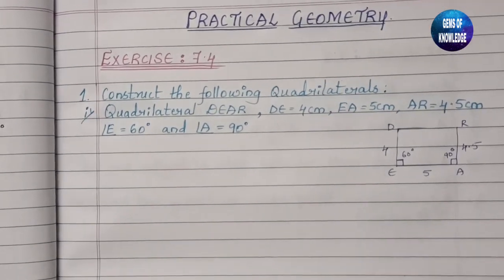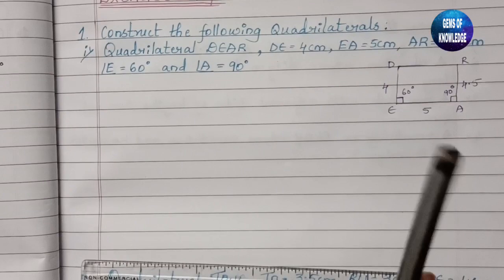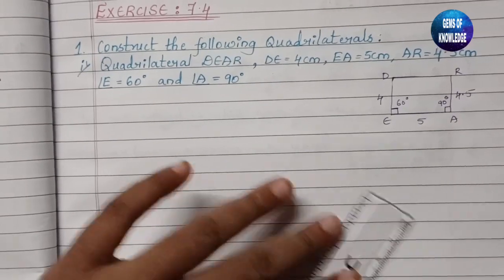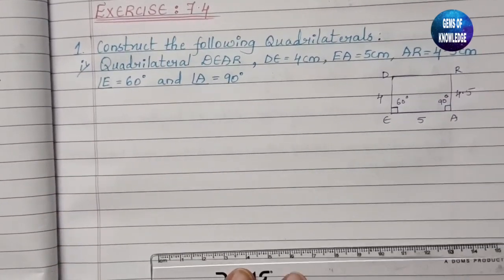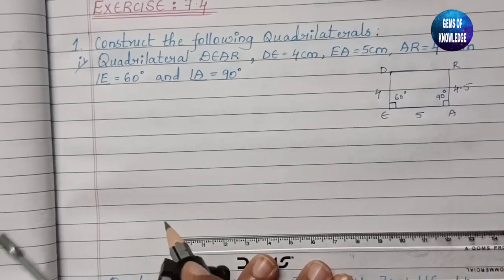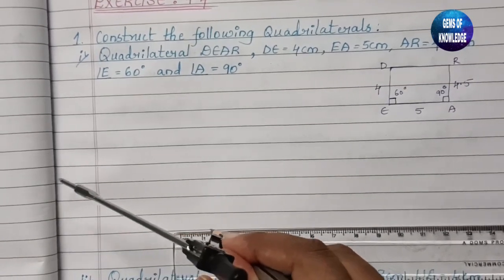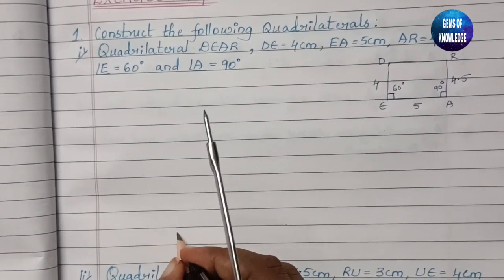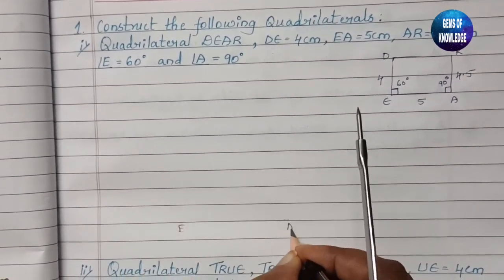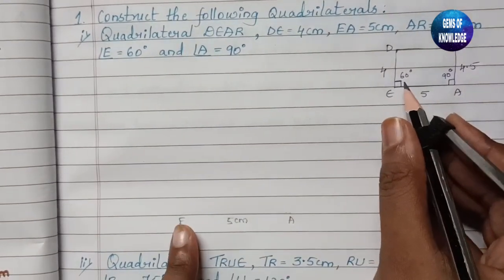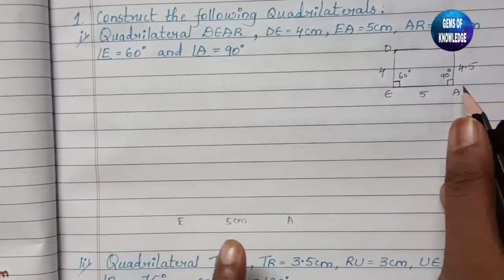Now we are going to draw the figure. The first measurement given is EA = 5 cm. Using a scale, let us draw a 5 cm line starting from zero. This line represents EA, which is 5 cm. Then we need 60° at the E end and 90° at the A end.